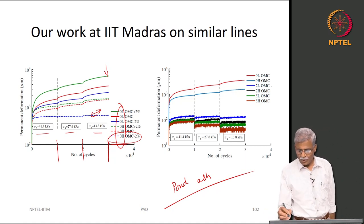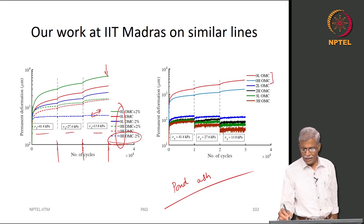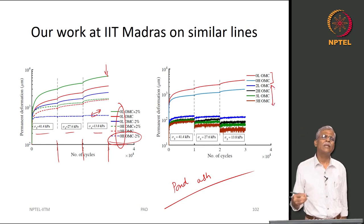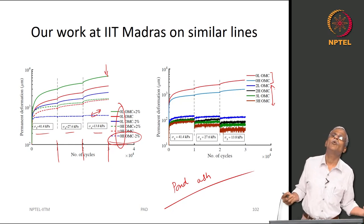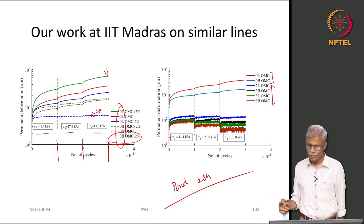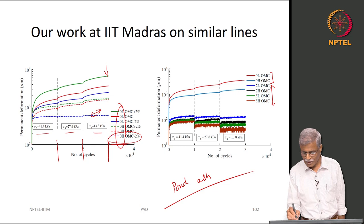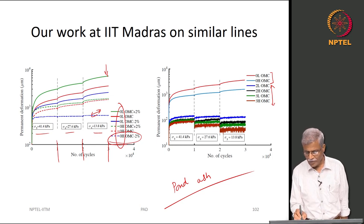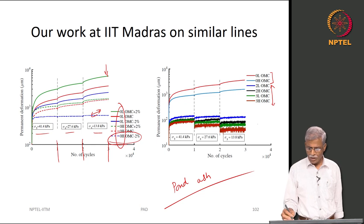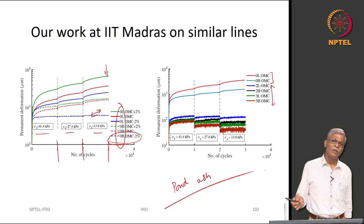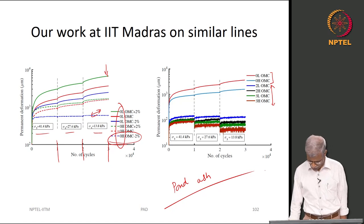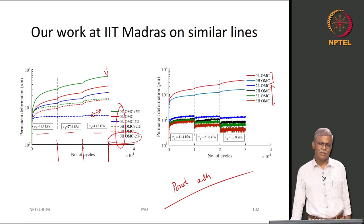Results showed that with heavy compaction at minus 2 percent OMC, the material reached shakedown. But with light compaction at plus 2 percent OMC, it never reached the shakedown limit — meaning this material would permanently keep on deforming in the pavement, which is not good. This conclusion came from running 30,000 laboratory cycles. With 2 percent and 3 percent cement added, the values kept varying favorably. This work was part of a PhD thesis published in several journals.